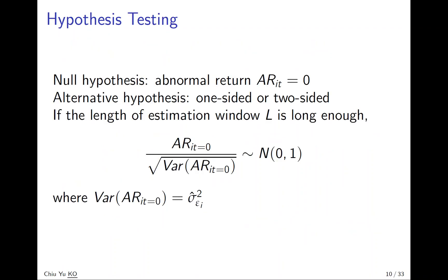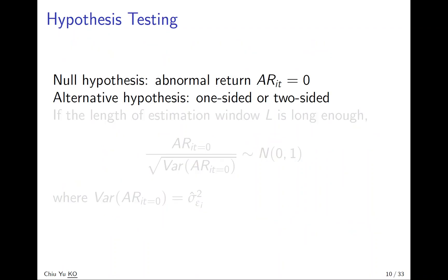So now we know the variance, so we can do hypothesis testing. We want to actually check the abnormal return is not just positive and negative due to random event. So the null hypothesis, as a standard, we have abnormal return equal to zero. And alternative hypothesis can be one-sided or two-sided, depending on what assumption you are making.